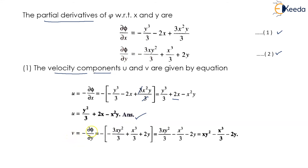For v = -∂φ/∂y, substituting equation 2, the two negatives become positive, and the threes cancel. This gives v = xy² - x³/3 - 2y.